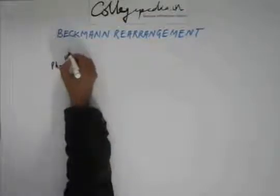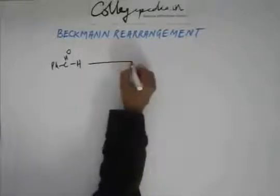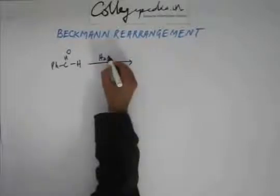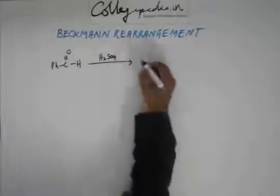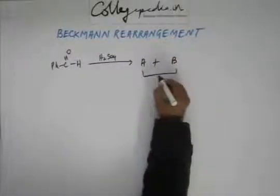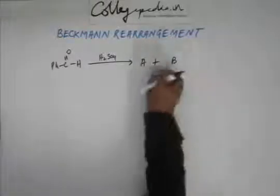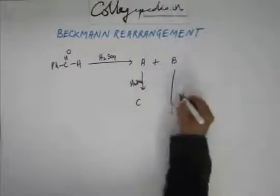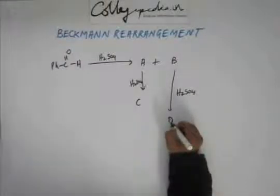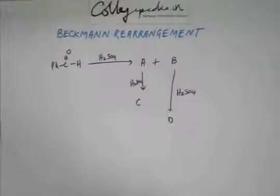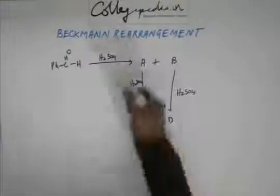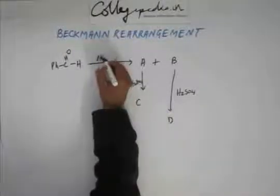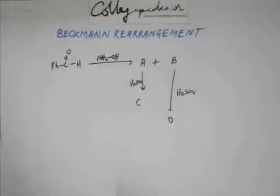Suppose I have benzaldehyde. I add hydroxylamine to this — I got A plus B. On A I add H2SO4 and I got C; when I add H2SO4 on B, I got D. So you have to tell me what is A, B, C, and D. You will add hydroxylamine to benzaldehyde and correspondingly you will have two isomers A and B, and each isomer will give one final product — C and D.